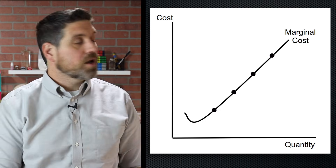So for competitive firms, the marginal cost curve above the average variable cost is the short-run supply curve. As the price goes up, they produce more. As the price falls, they produce less. But if it falls below a certain point — the minimum AVC — they shut down and produce nothing.